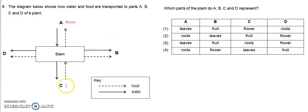As for C, we can see that food is coming from C, given to the stem, and then transported to other parts of the plant. Food originates from leaves, so C is the leaves.